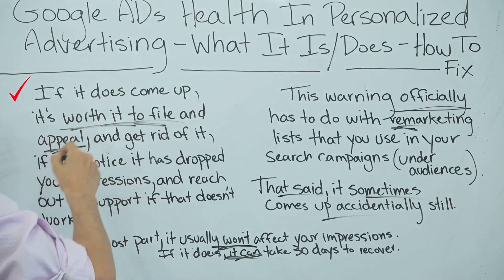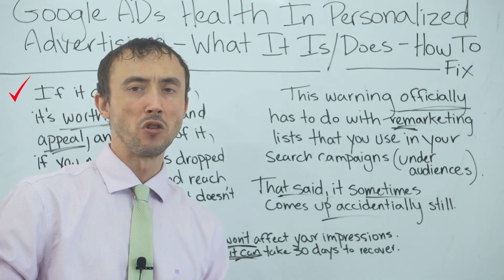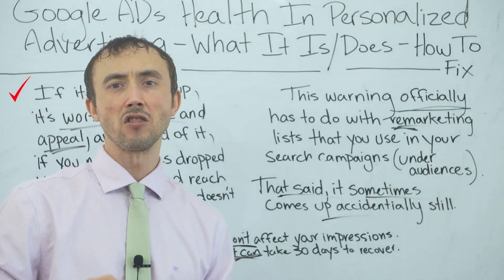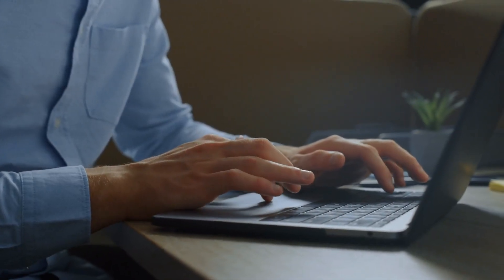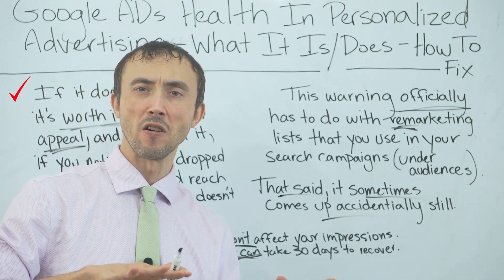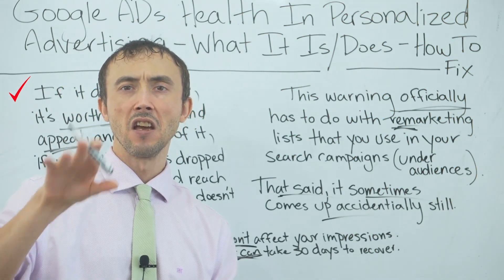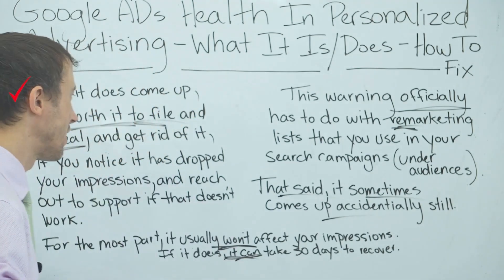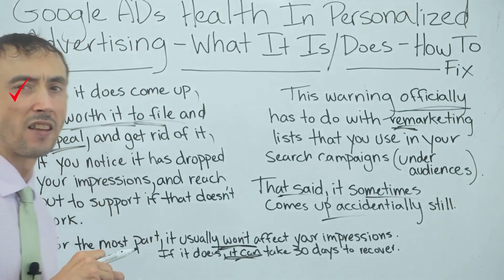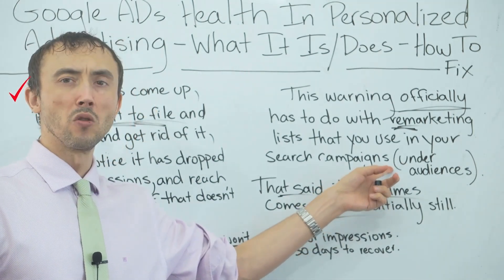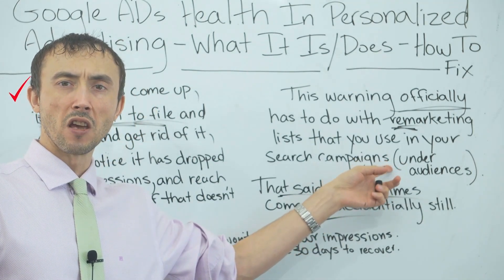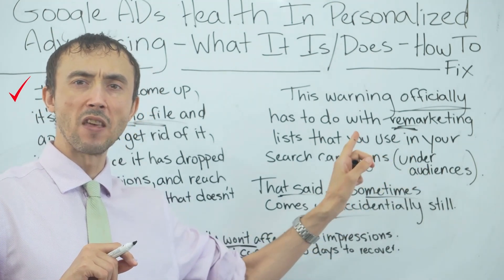You can file an appeal by hovering over the ad, and through the policy manager you can keep checking whether that appeal was decided in your favor. If the appeal does not go in your favor — meaning Google is saying you're still violating their policies even though you're not doing any remarketing — you'll need to take further action.